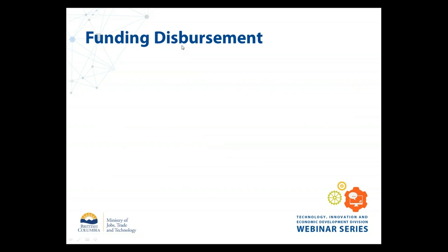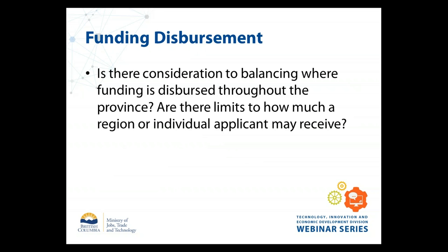Moving to funding disbursement. Is there consideration for balancing where funding is dispersed throughout the province, and are there limits to how much a region or individual applicant may receive? When making funding decisions we do look to ensure funding is distributed throughout the province, but there is no formal formula. The main determinant of whether a project gets funded is the quality of the application and the strength of the proposed project. Geographic distribution is a consideration but not a determining factor.